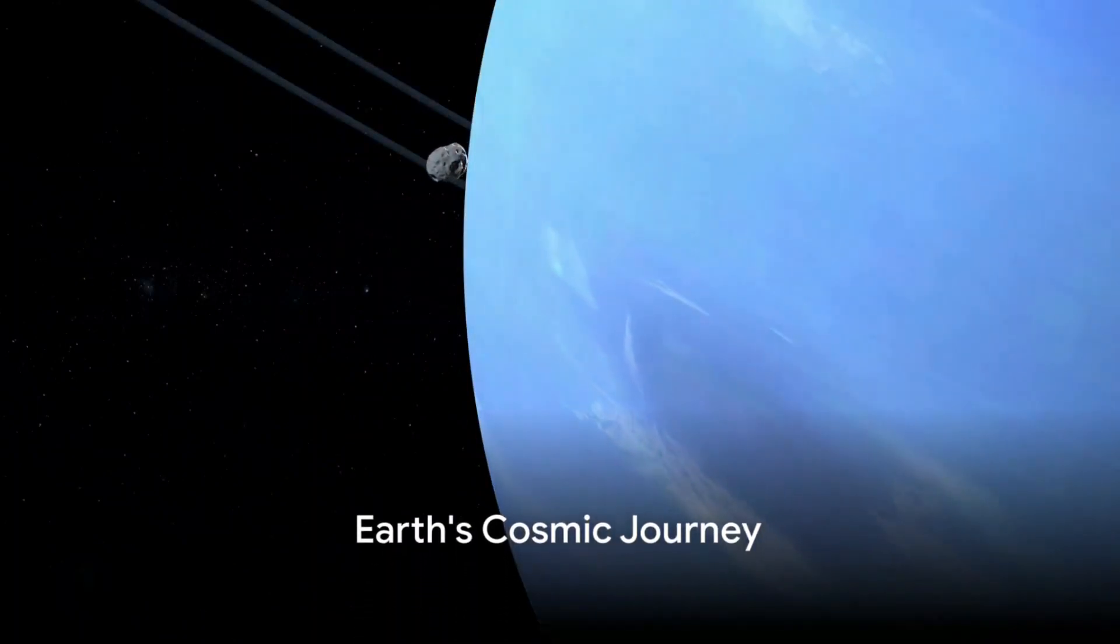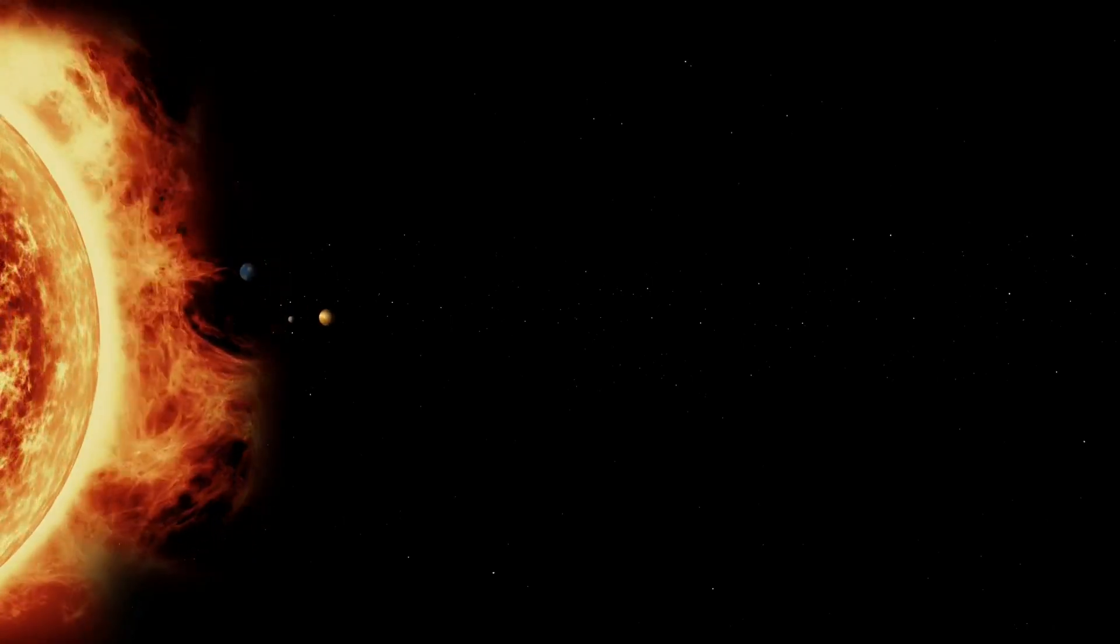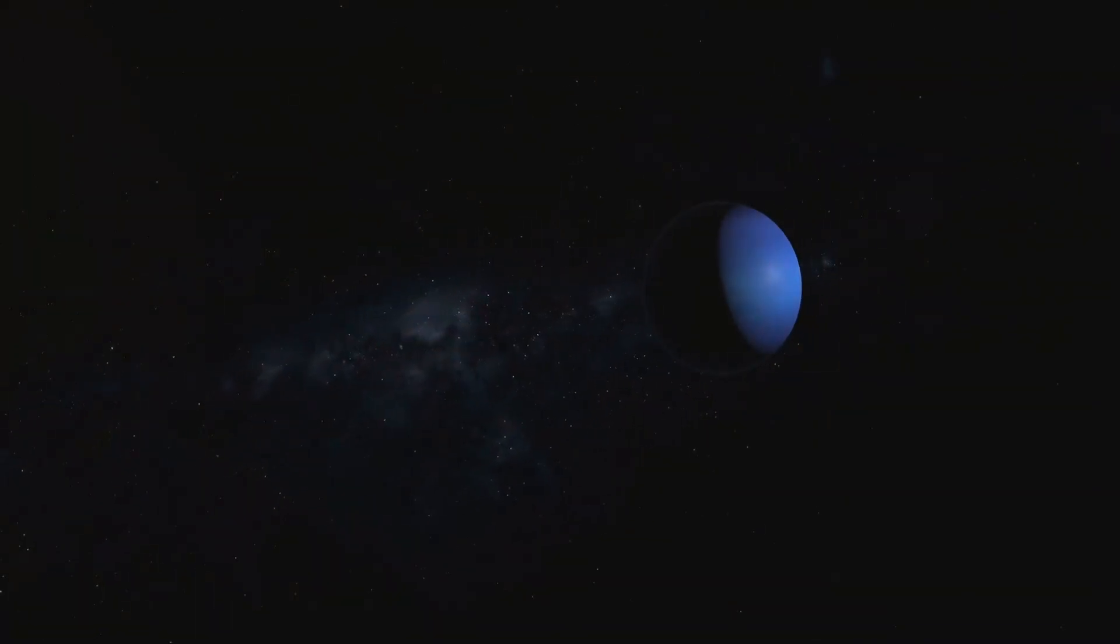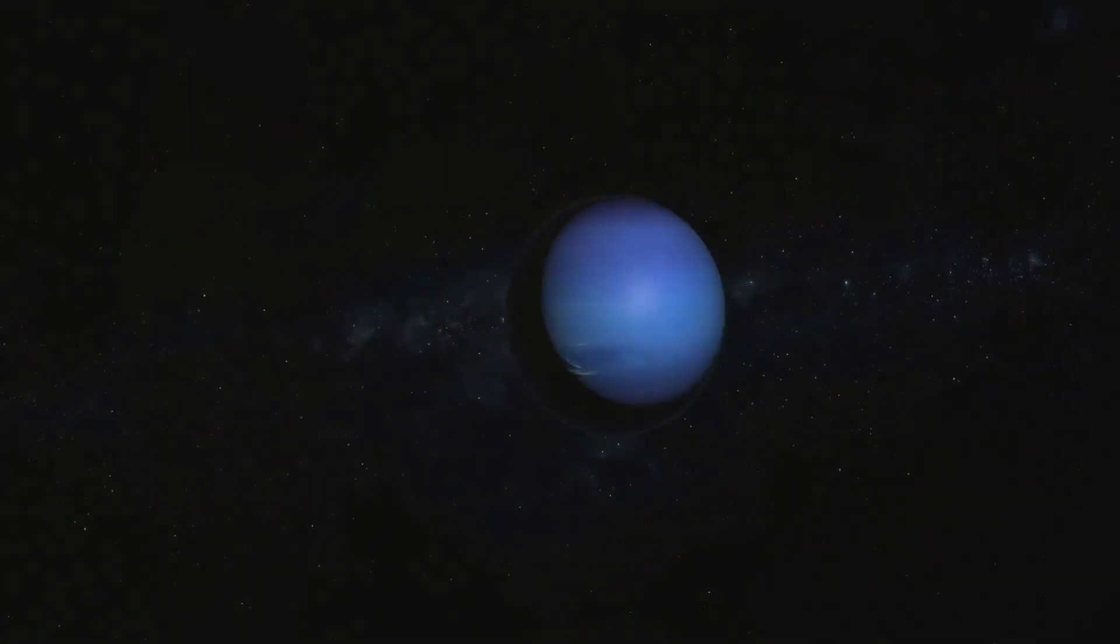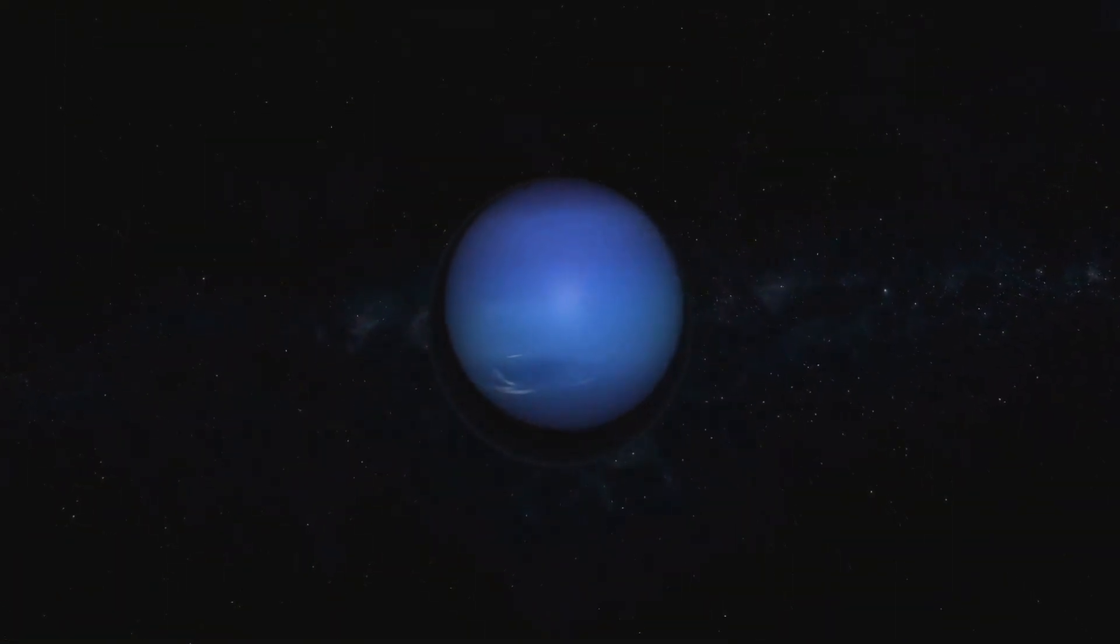What if Earth was no longer a planet but a moon of Neptune? Picture this: Earth, our familiar home, is suddenly uprooted from its comfortable position as the third rock from the Sun and finds itself orbiting Neptune, the eighth planet in our solar system.